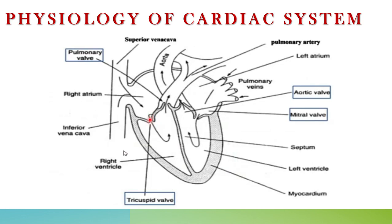One major function of the tricuspid valve is that it does not allow blood to flow back from the ventricle to the atrium. It allows blood to pass from the right atrium to the right ventricle, but it does not allow blood to pass from the right ventricle back to the right atrium.